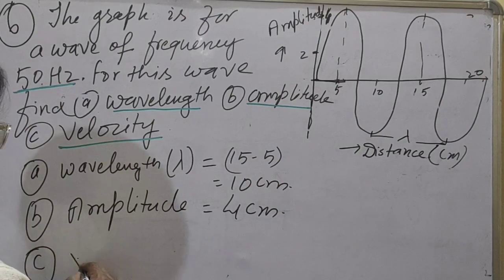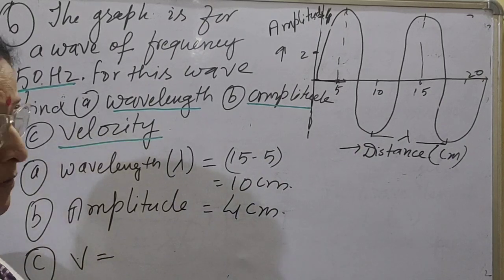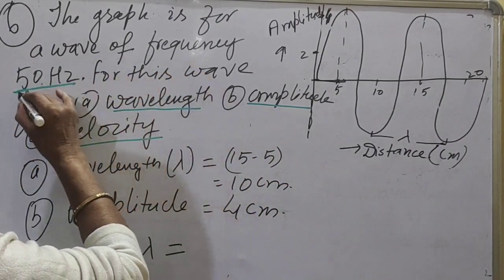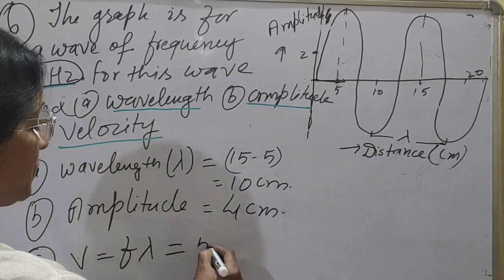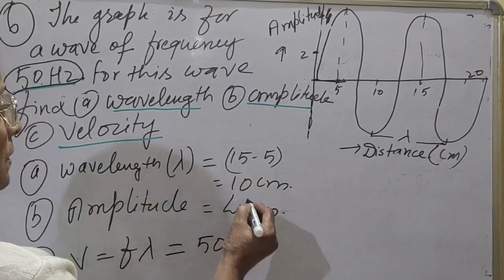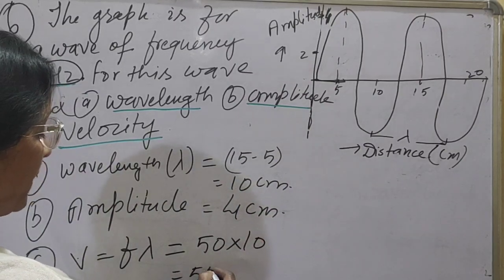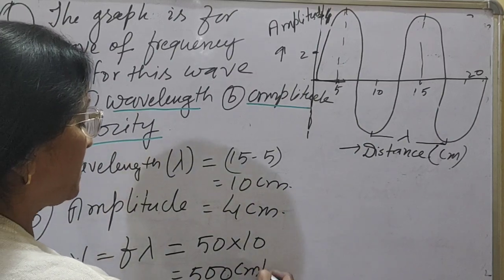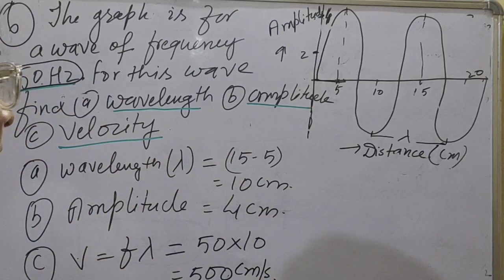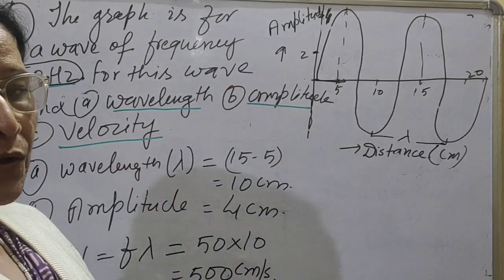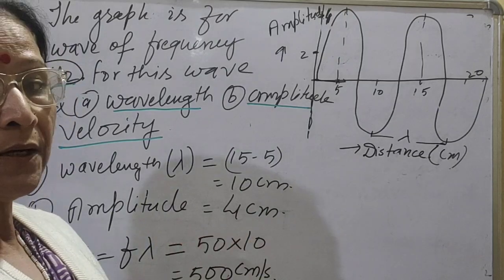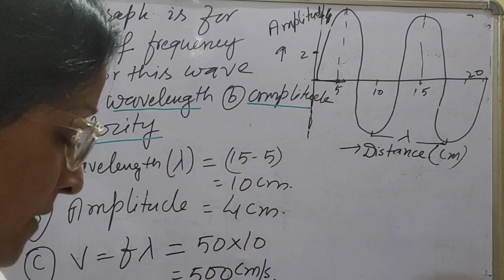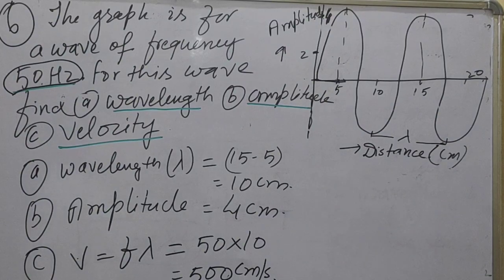Now we have to find wave velocity. We know that V is equal to frequency into lambda. Frequency is given as 50 hertz and lambda is 10 centimeter, so V equals 50 into 10 equals 500 centimeter per second. By this way this kind of question can also be solved easily, but we need to pay attention and understand the question. Keep solving questions like this and you will have a very good grip on numericals.